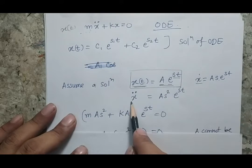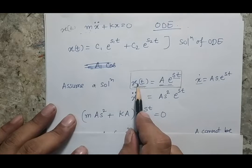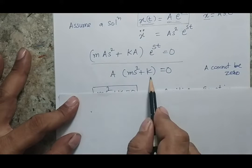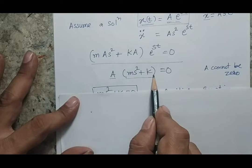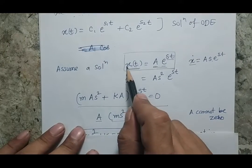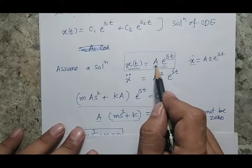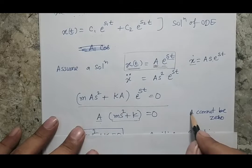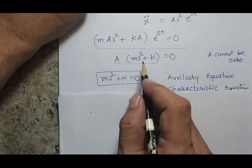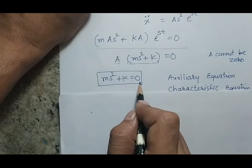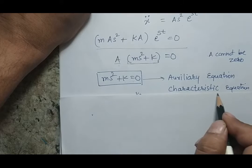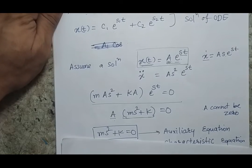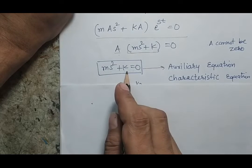Substituting x = Ae^(st) into the equation, I compute the velocity and acceleration expressions and substitute them back. This gives the expression where either A = 0 or the remaining quantity equals zero. Since A represents the amplitude, A = 0 would mean no motion, so A ≠ 0. Therefore ms² + k = 0. This is known as the auxiliary or characteristic equation.